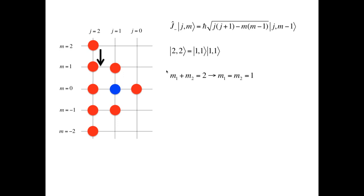If we apply it to this, we will first apply it to state |2,2⟩. In that state, the Clebsch-Gordan coefficient is just 1, and it has a value of 1. The reason for that is that there is only one possible combination of M1 and M2, such that M1 plus M2 is equal to 2. That combination is M1 equals M2 equals 1.